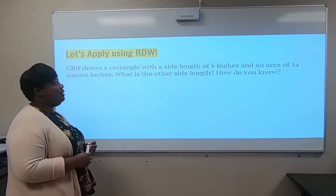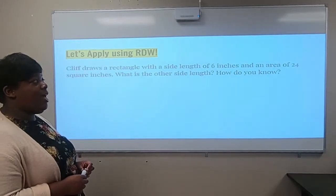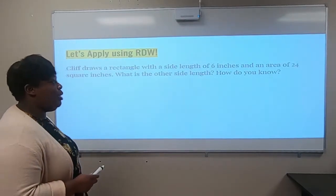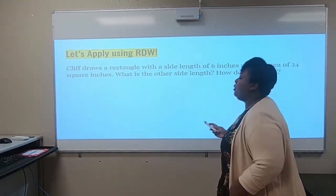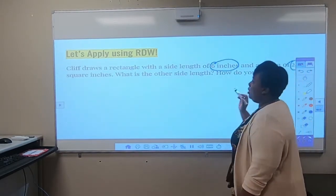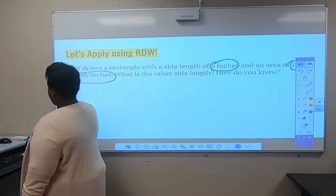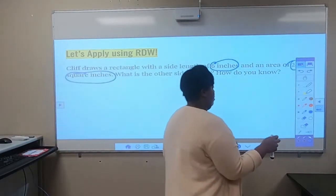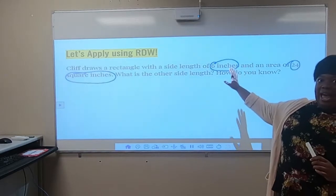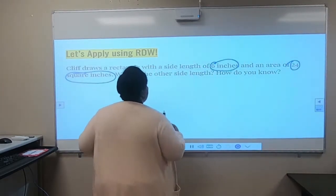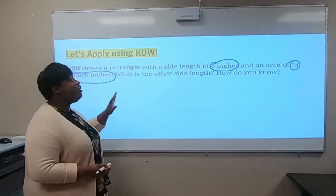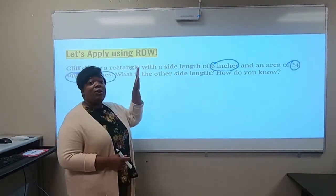Let's look at the first problem: Cliff draws a rectangle with a side length of six inches and an area of twenty-four square inches. What is the other side length? How do you know? Let's circle our numbers: six inches and twenty-four square inches. When I look at those two numbers, I notice I have a total and a factor, which tells me I'm looking for the missing factor — an unknown side.